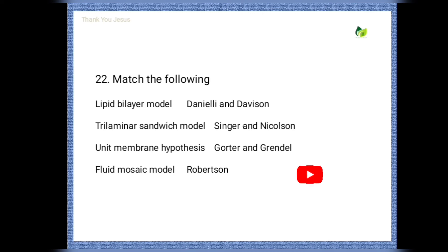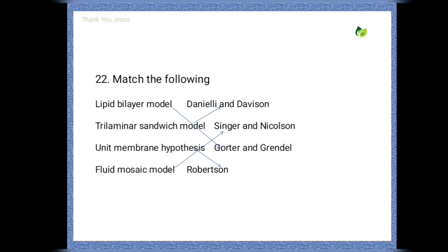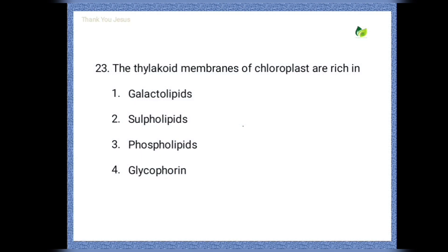Next question — match the following plasma membrane models with the correct scientists: the lipid bilayer model was proposed by Gorter and Grendel; the trilaminar sandwich model was proposed by Davson and Danielli; the unit membrane hypothesis was proposed by Robertson; and the fluid mosaic model was proposed by Singer and Nicholson.